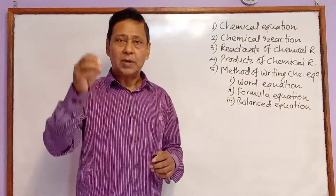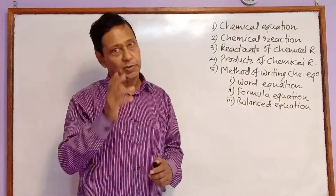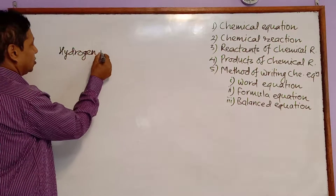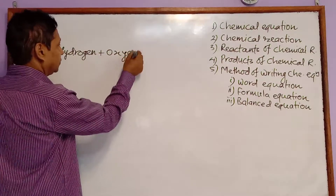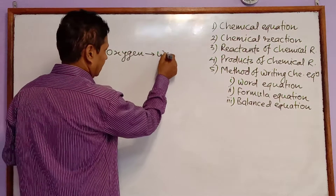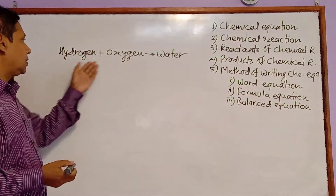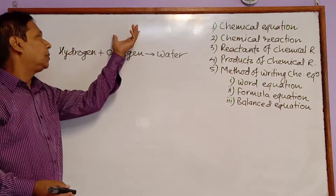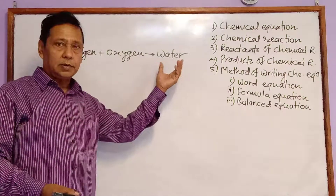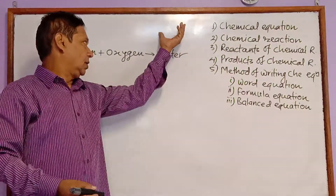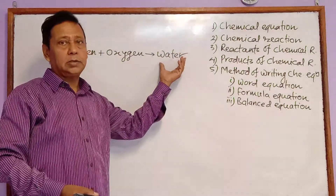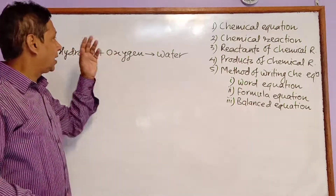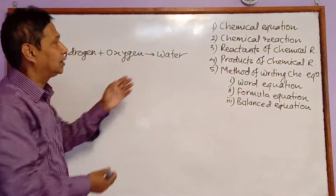A chemical equation is an equation which represents a chemical change in short form. For example, when hydrogen combines with oxygen, they form water. This is a chemical change because hydrogen and oxygen are completely different from water. Hydrogen is a combustible gas, oxygen helps in combustion, but when they combine to form water, water is neither combustible nor does it help in combustion — it is used to extinguish fire. This change is a chemical change, and it is represented by a chemical equation.